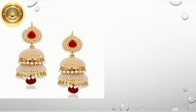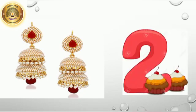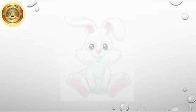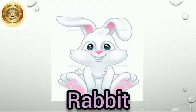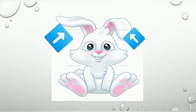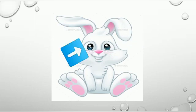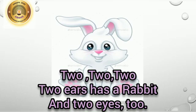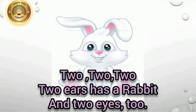Students, what are these? These are earrings. And how many earrings are there? Two earrings are there. Now, what is this? This is a rabbit. How many ears does the rabbit have? Two. And how many eyes does the rabbit have? Two. Two ears and two eyes.